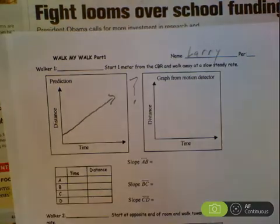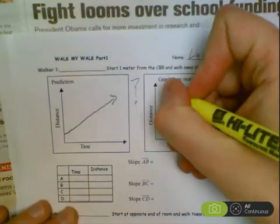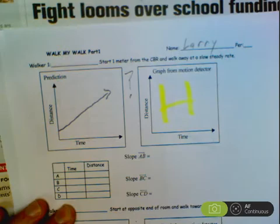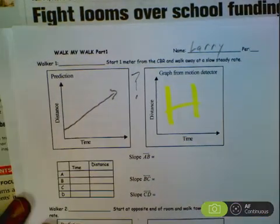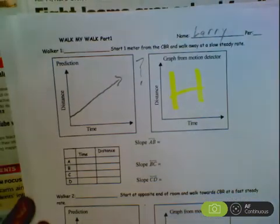You can use a highlighter if you want. Highlighter. We'll put a big H for highlighter. You can say, what's the slope? Blah, blah, blah. But what's nice is you can write nice and small. It appears on the screen.